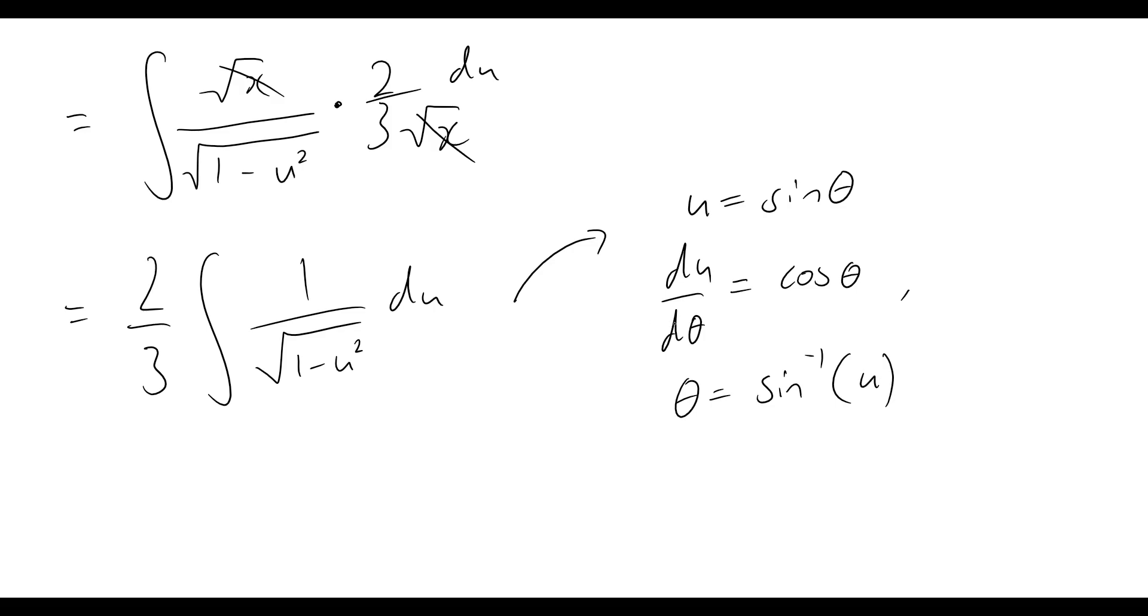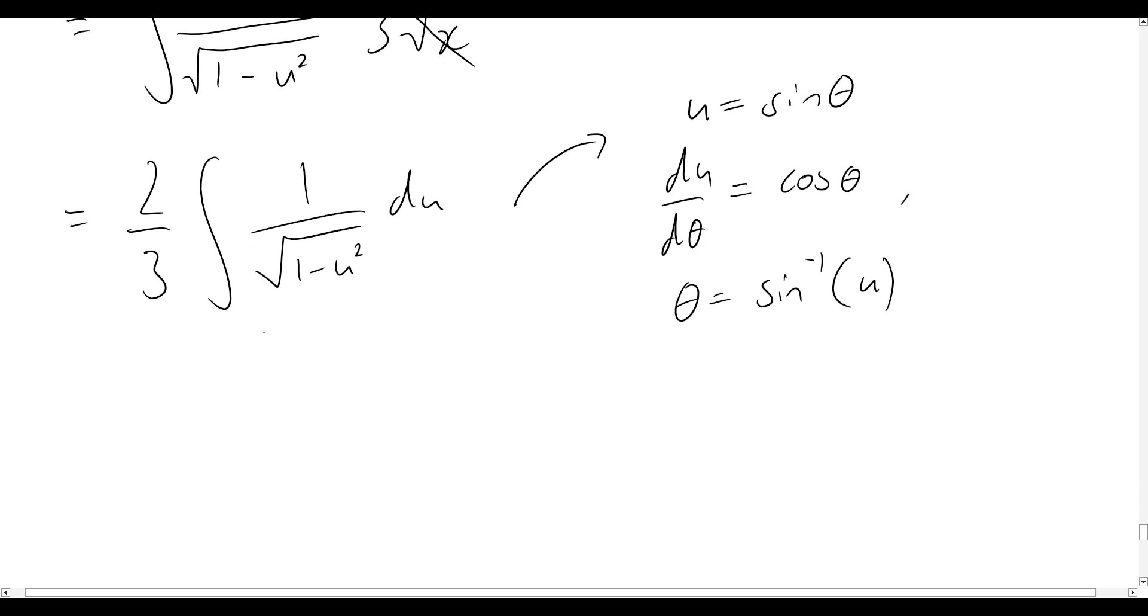Okay, now that we've got that out of the way, let's have a quick look back at what we've written. So I've said that u equals sine theta, so now I can rewrite my problem as 2/3 integral 1 over square root 1 minus sine squared theta du.